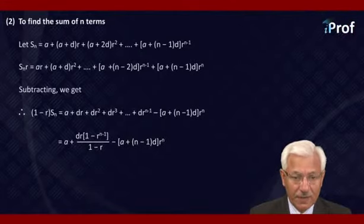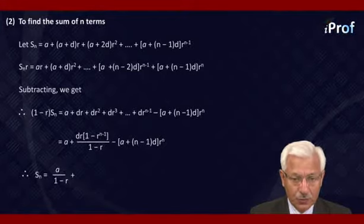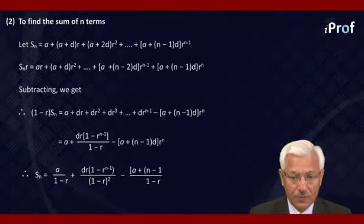Dividing by (1 − r), we get S_n equal to a/(1 − r) plus d·r times (1 − r^(n−1)) divided by (1 − r)²,  minus (a + (n−1)d)·r^n divided by (1 − r).